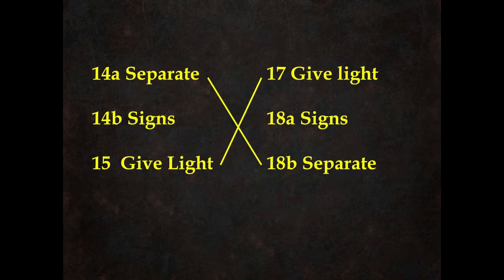So looking at what this pattern is pointing to: 'separate' on the left is at the top, and on the right is at the bottom — it's just drawing a line, showing you the A, B, C, C, B, A. The Greek letter chi is spelled C-H-I, and that's where the name comes from.